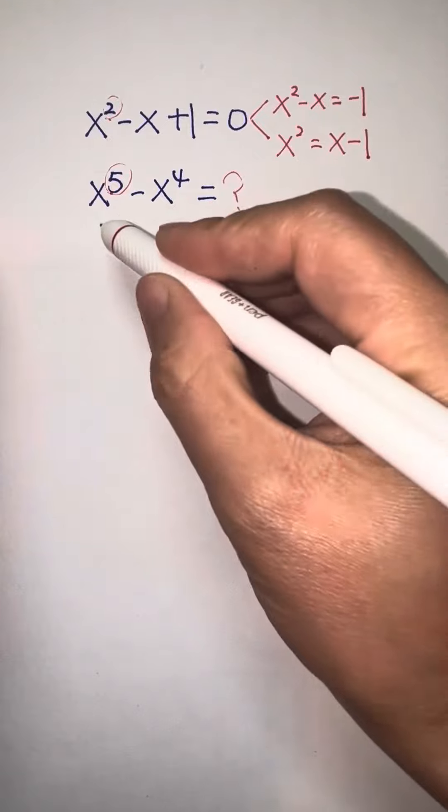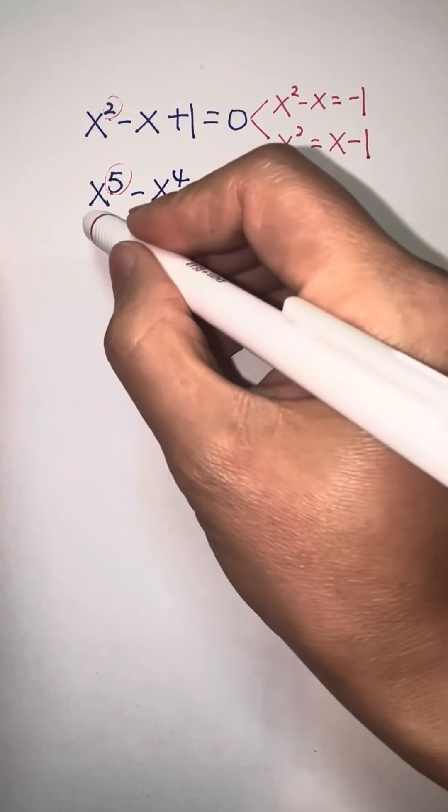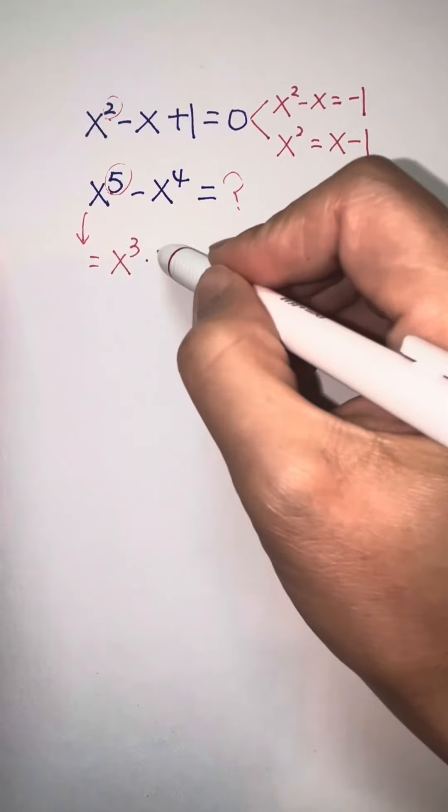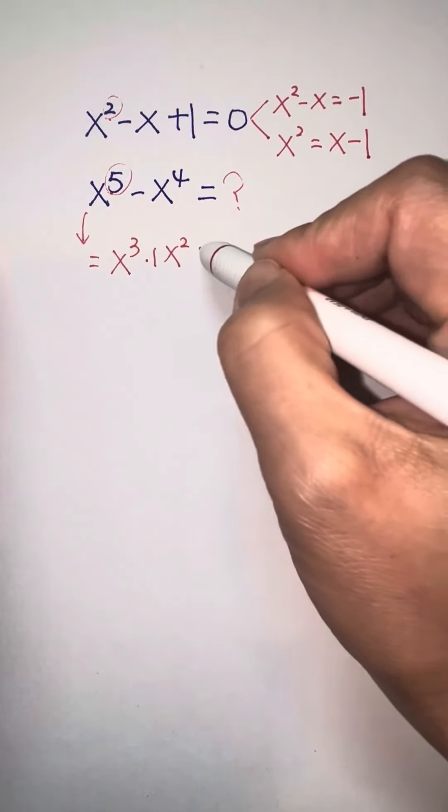And second, we're going to lower the power here. That means we can write it as x cubed times x squared minus x.